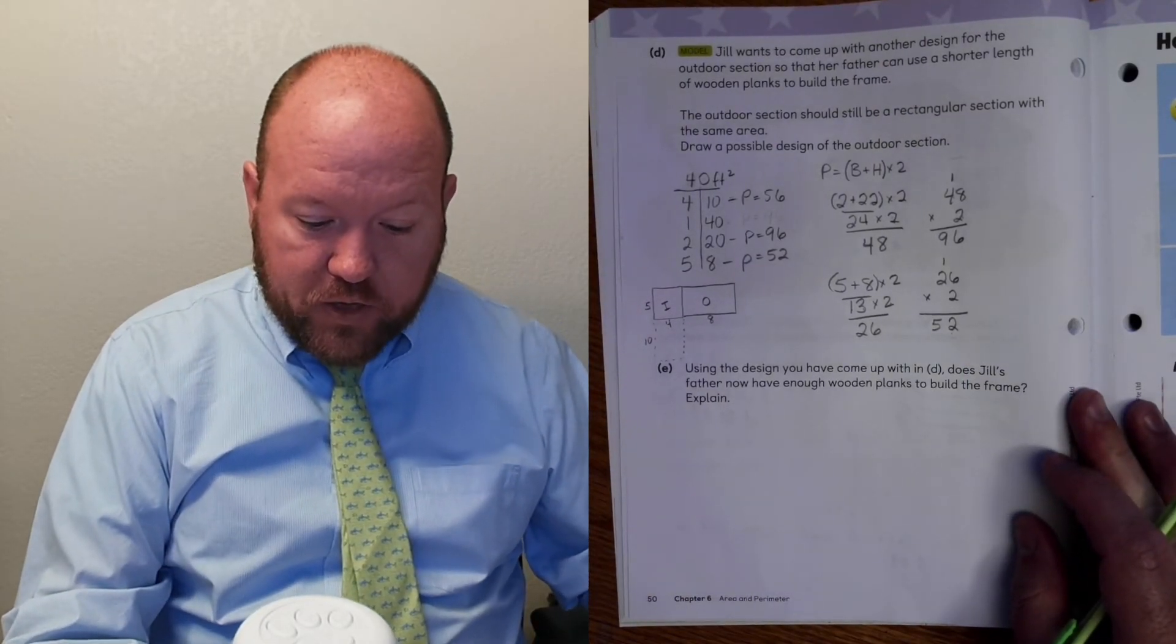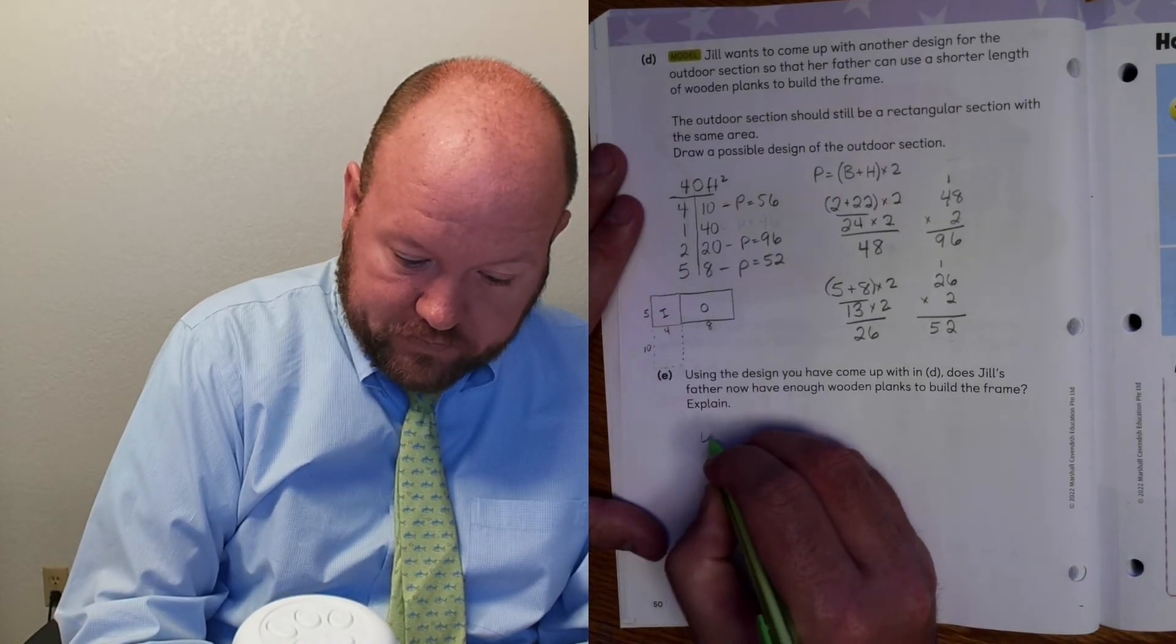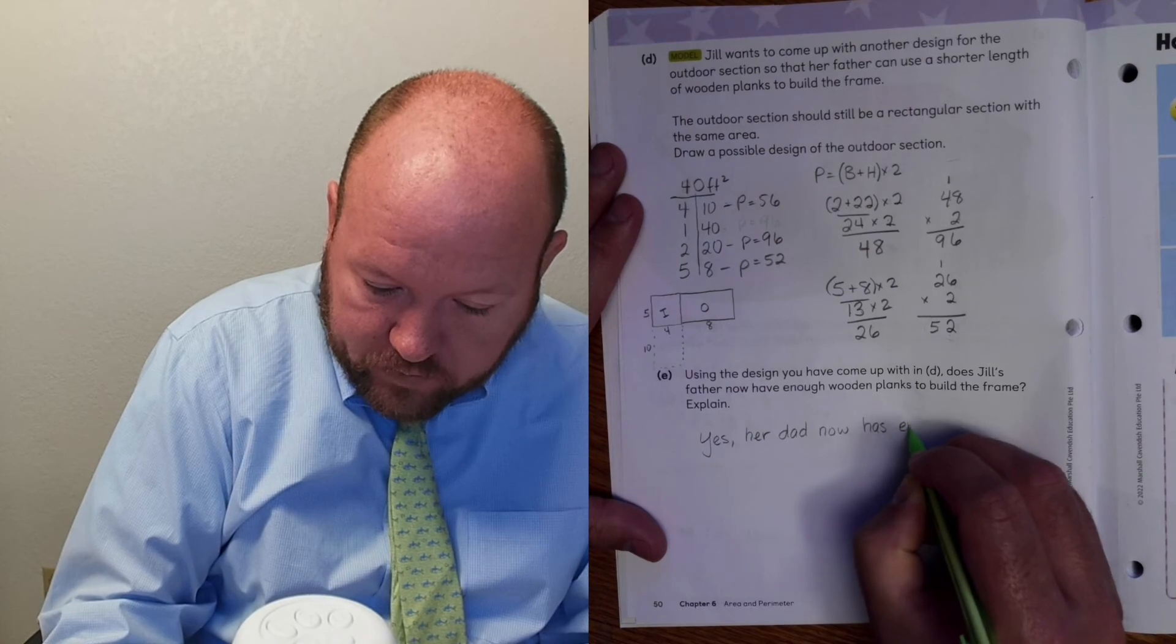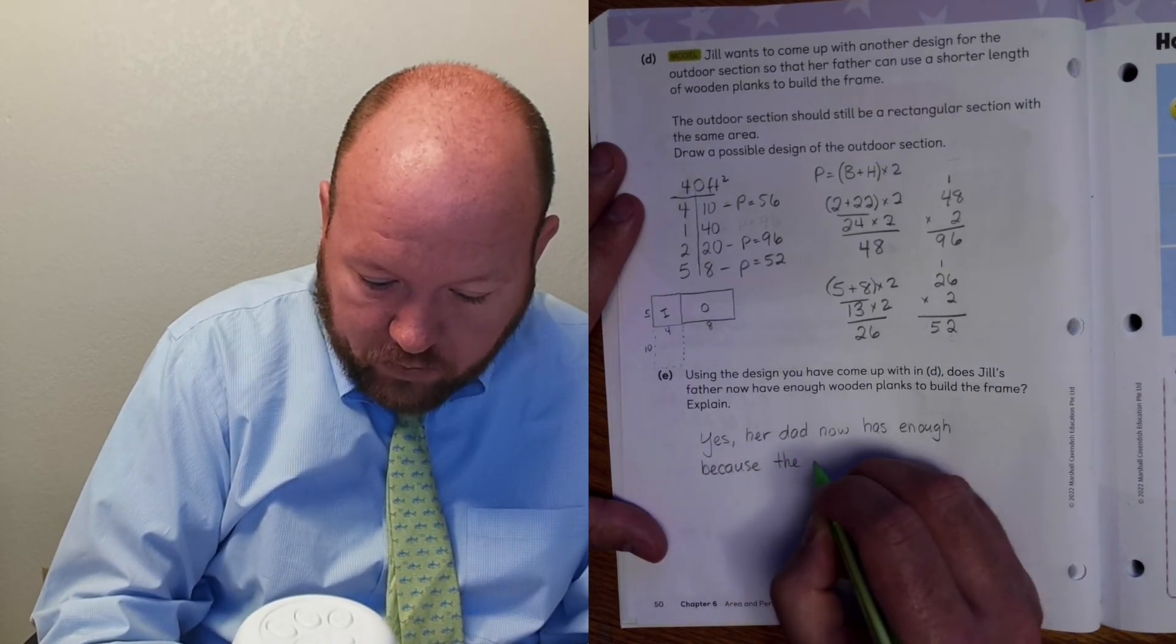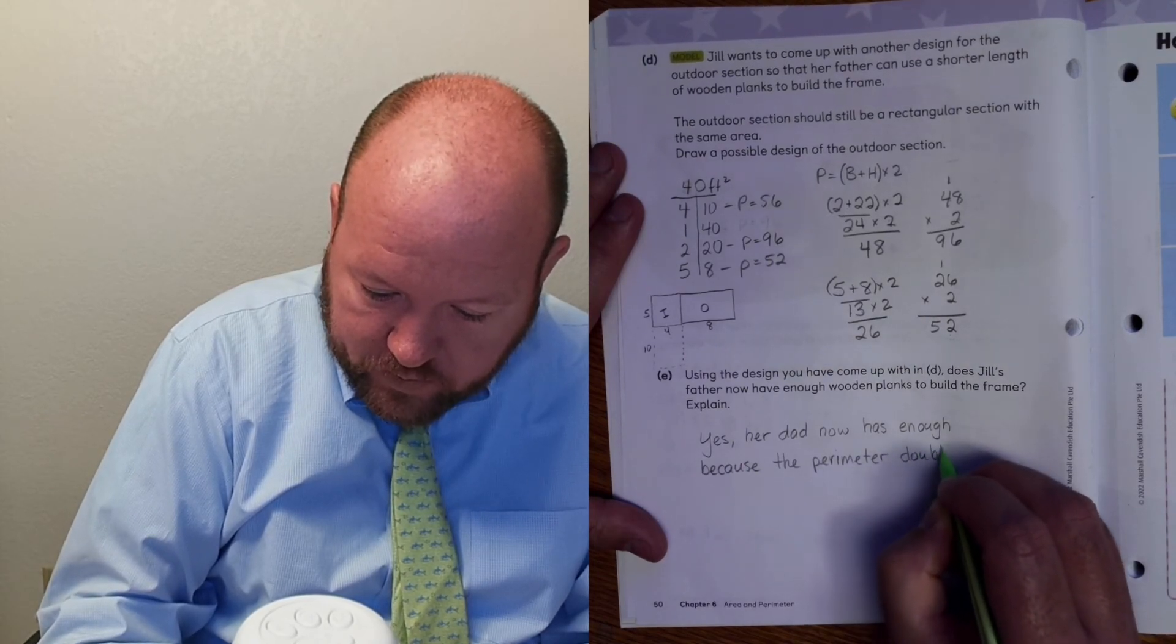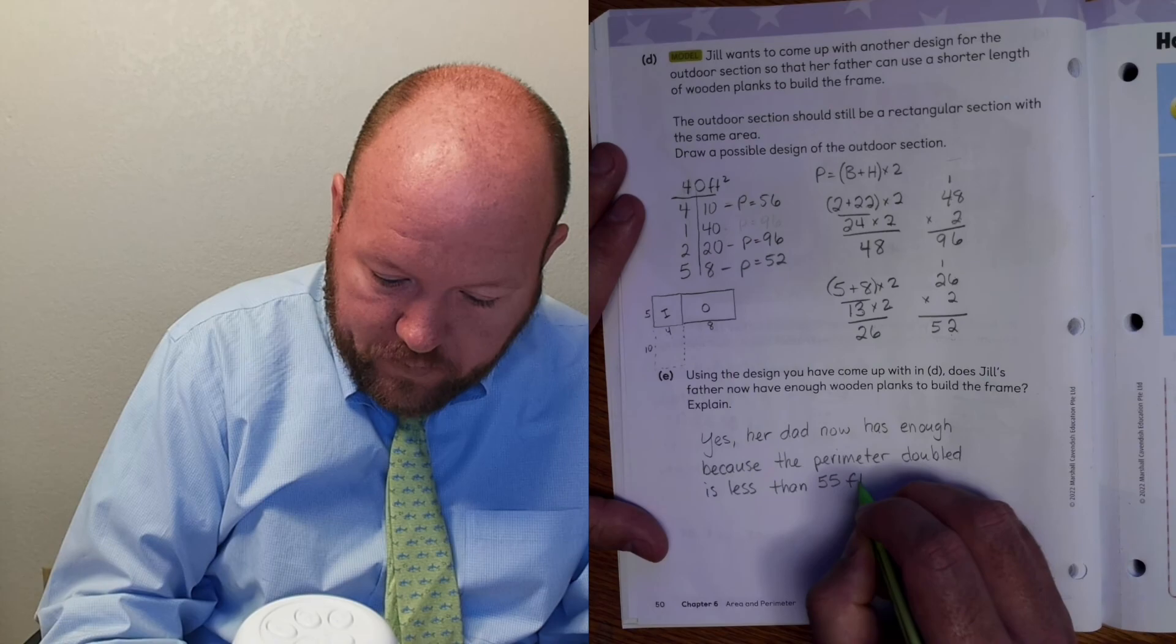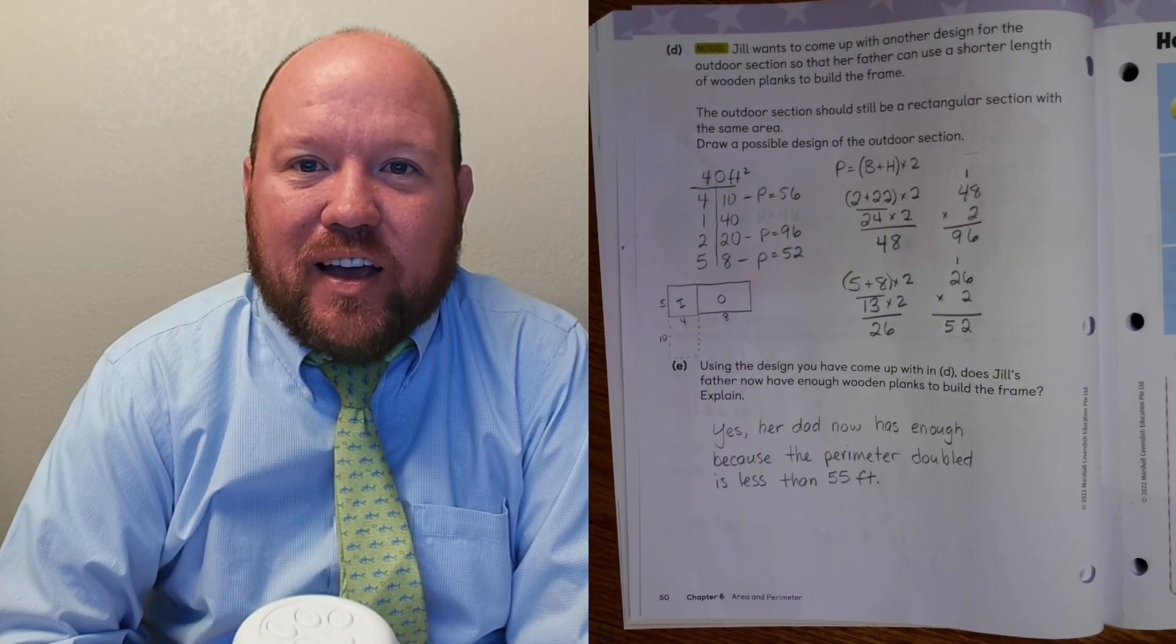Now, last question. Using the design you have come up with, does Jill's father have enough wood planks to build the frame? Explain. Yes. Her dad now has enough because the perimeter doubled is less than 55 feet. So now, her father has enough. Well, that is the end of our lesson. I hope you have a terrific day. I look forward to seeing you next time.